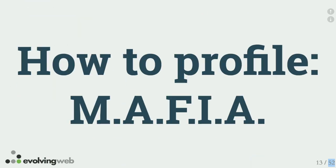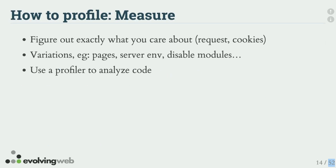The next section is our profiling methodology. The same marketing consultant said we need more acronyms, so we came up with our methodology called MAFIA. M is for Measure: figure out exactly what you care about to measure. Use a benchmark tool like Chrome DevTools, which will show you how long each page takes. Keep it open as you browse your site and other sites to connect your intuition about what's fast and slow to the actual numbers for backend loading time. Also keep in mind that some pages are cached, some are not, whether you're logged in, and exactly what URL you're looking at.